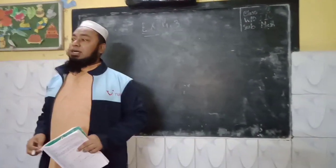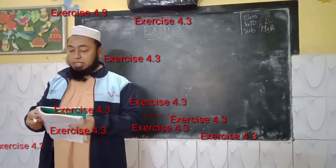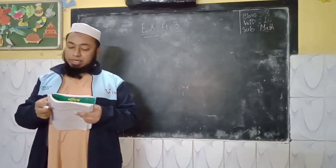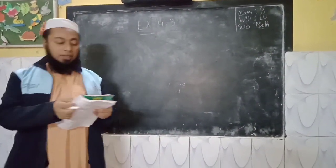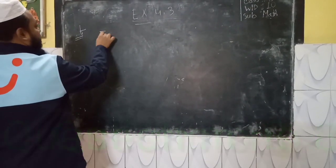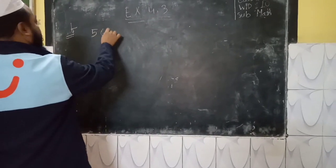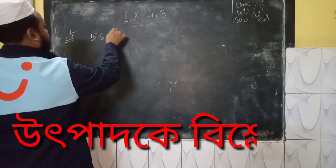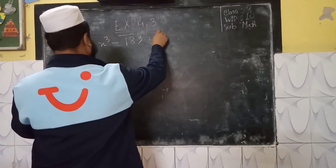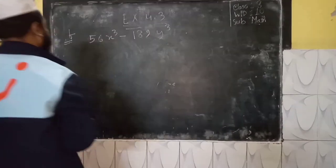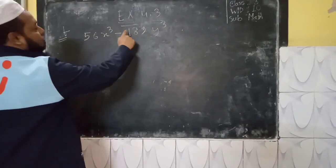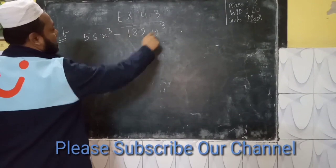How did you do? 100. How did you do? 8 number. 56. 56 x cube minus 189 y cube. How did you do? 56 x cube minus 189 y cube.